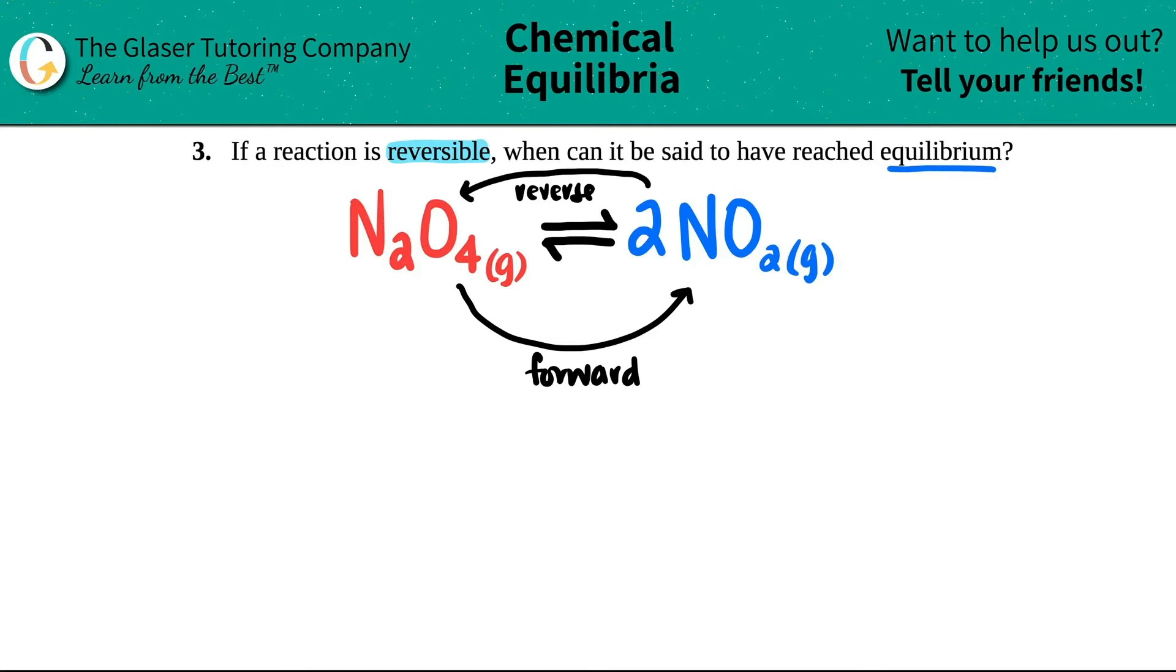So, you have two basically reactions going on. You have the forward one, and then you have the backward one. All right, but now how do we know when it reaches equilibrium?